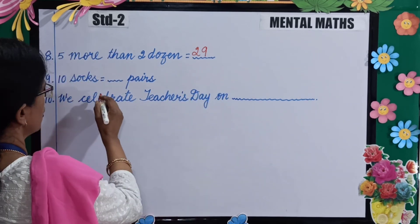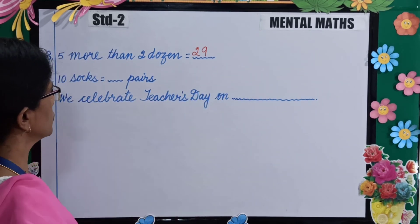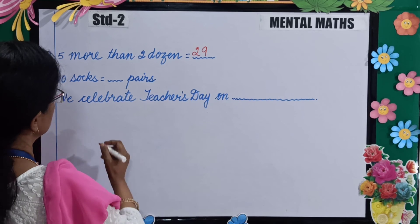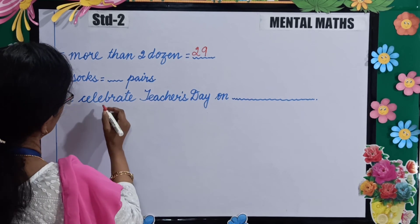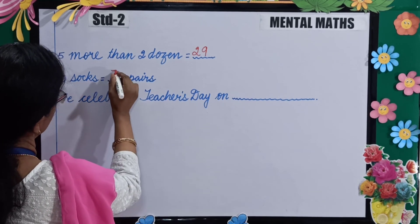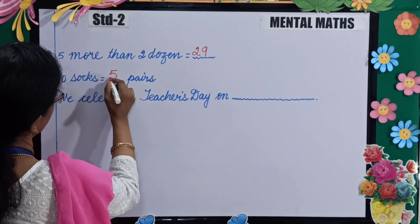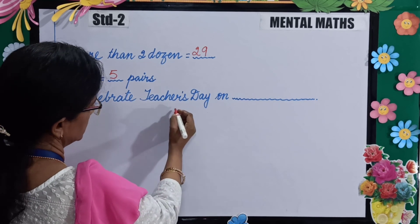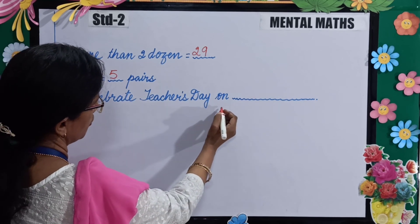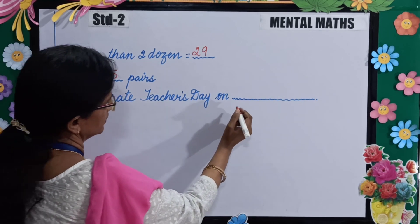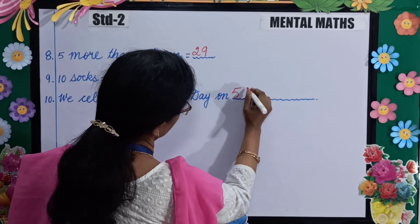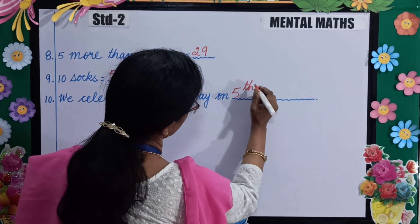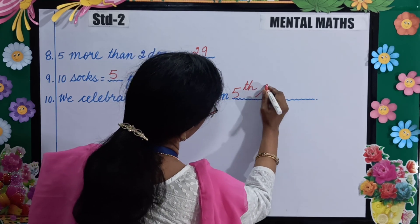10 socks is equal to how many pairs? 10 socks is equal to 5 pairs. We celebrate Teacher's Day on? Yes, very good — 5th September.